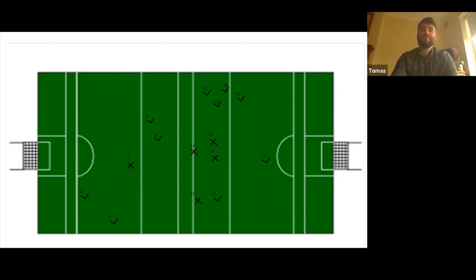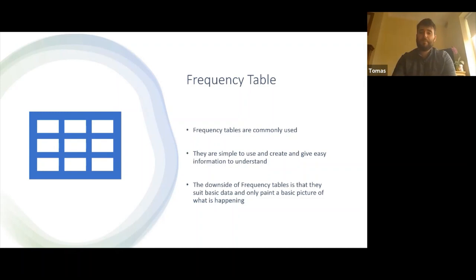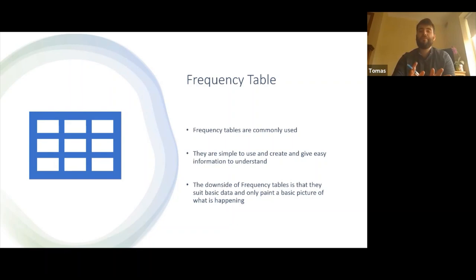The next notation system is a frequency table. Frequency tables are commonly used and very simple to use and create — they give easy-to-understand information. The great thing about a frequency table versus a scatter diagram is that with scatter diagrams you have to do a count to find your information, but with a frequency table it's all there in front of us. It's very easy to turn around and say 'we've won four out of five puck outs.'